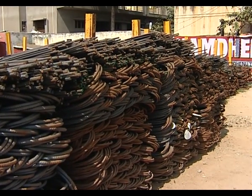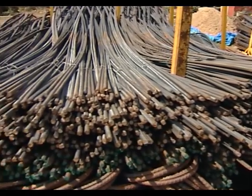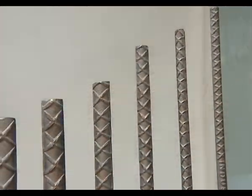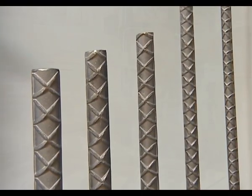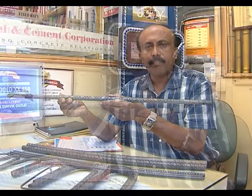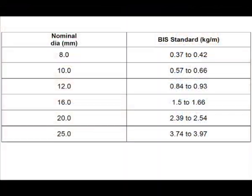The bars are available in different diameters having a standard length of 12 meters. The weight of the bar varies with diameter. The weights per meter length as per Indian standards are shown on the screen, which helps you to check the correct weight while purchasing the steel bars.